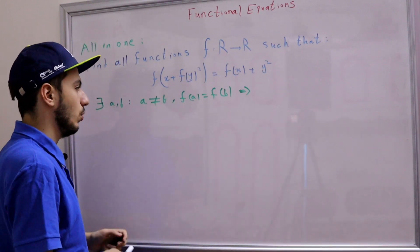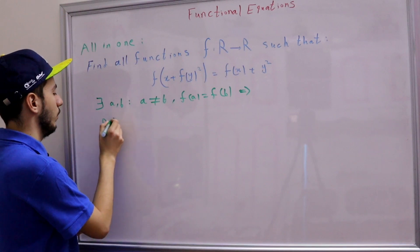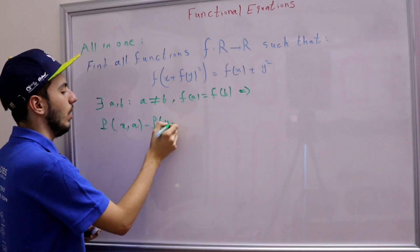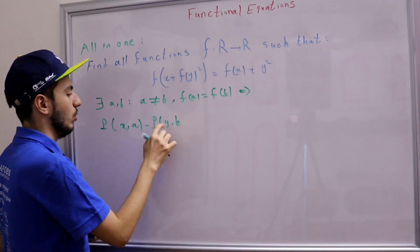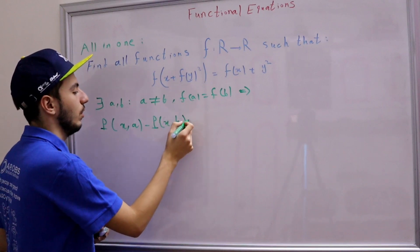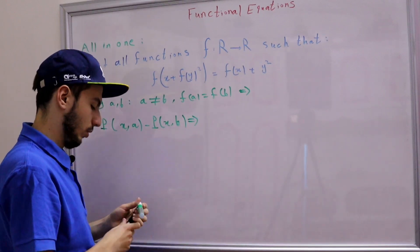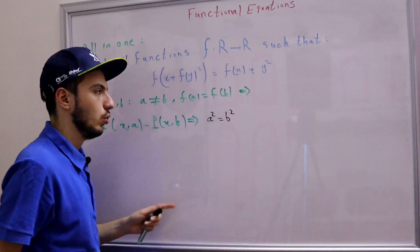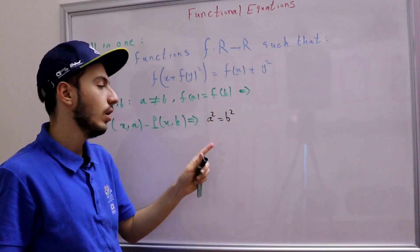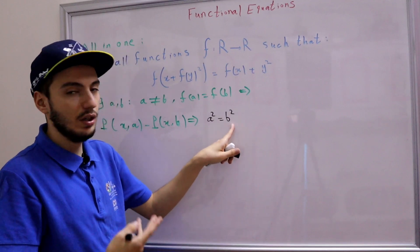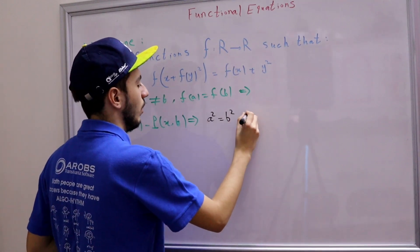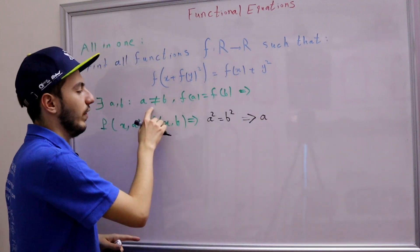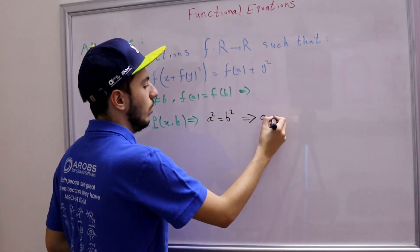So a² = b², which means a is equal to either b or negative b. We've assumed that a is not equal to b, so that means a is equal to negative b. This is the first thing we have.